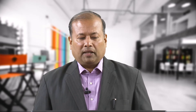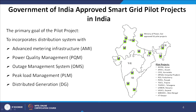The Government of India has approved many smart grid pilot projects. The primary goal of the pilot projects is to incorporate the distribution system with advanced metering infrastructure (AMI) schemes, power quality management (PQM), outage management systems, peak load management, and distributed generators. So many pilot projects are being executed — most of them have been completed and some are still in progress.